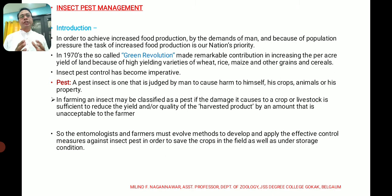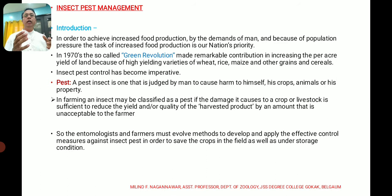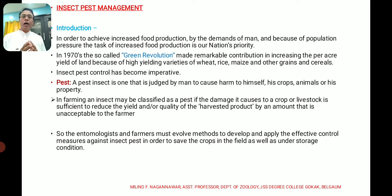What is a pest? A pest is an insect judged by a human. Not any insect can be called a pest, but one that a human feels is harming himself, his crops, his animals, or his property. In farming, it can be classified as the one which causes damage to crops and livestock, and sufficiently reduces the yield or quality of the harvested product by an amount that is unacceptable to the farmer.